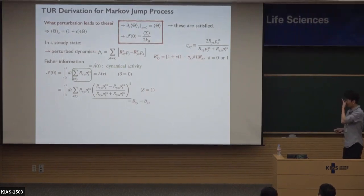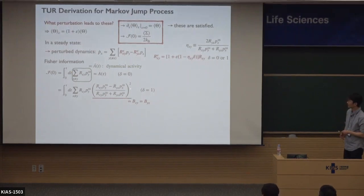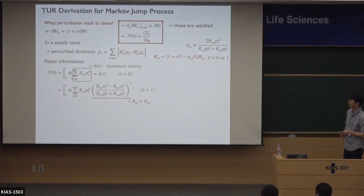Let's go further with the delta equal to one case. We define this squared function as b_xy. This is the same as b_yx because of the square here, so b_xy equals b_yx.